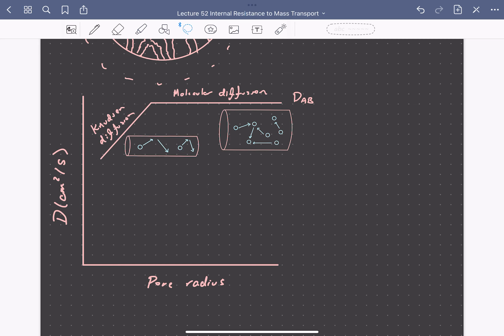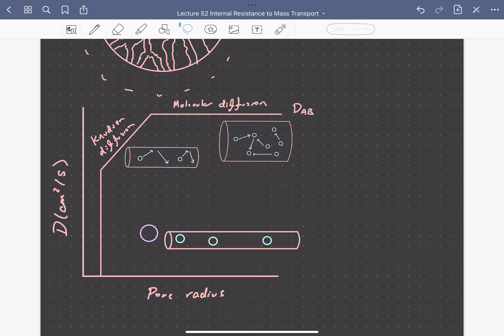Finally, if the pores are reduced more, the diffusion coefficient drops dramatically. In this range, the molecules must essentially move one by one single file through the pores, and at small enough sizes, the molecules are blocked from entering the pores, and the diffusion coefficient drops to zero. This is depicted by this purple molecule trying to move through the pore here. We'll call this regime Configurational Diffusion.